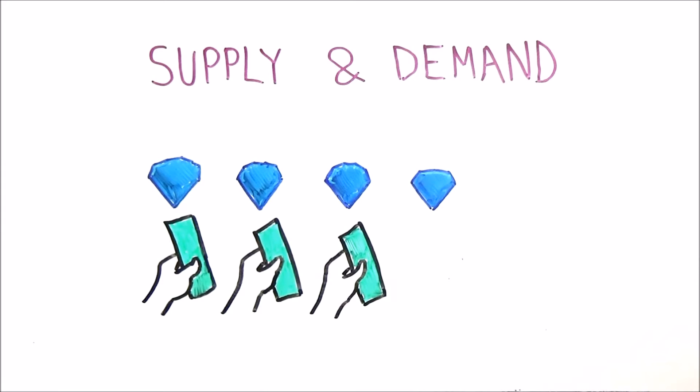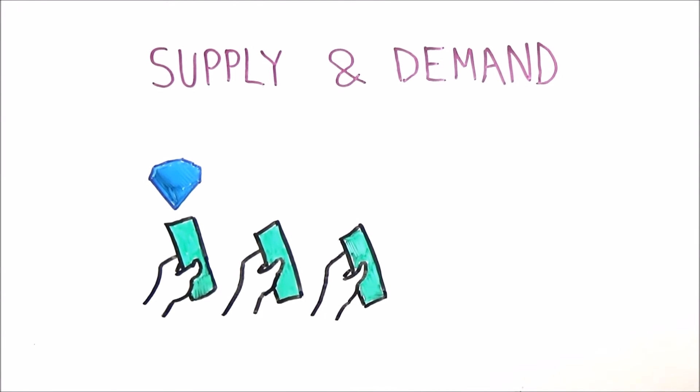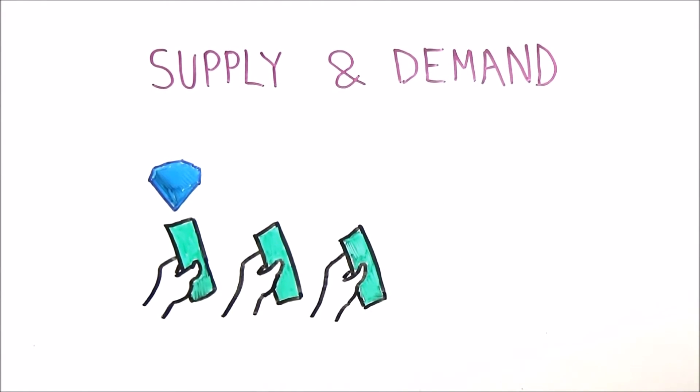Since 65% of the diamonds sold in the world come from a single company, De Beers, which cleverly lets out only a small supply at a time to increase the price of all the diamonds in the world, supply is arranged low and demand high.